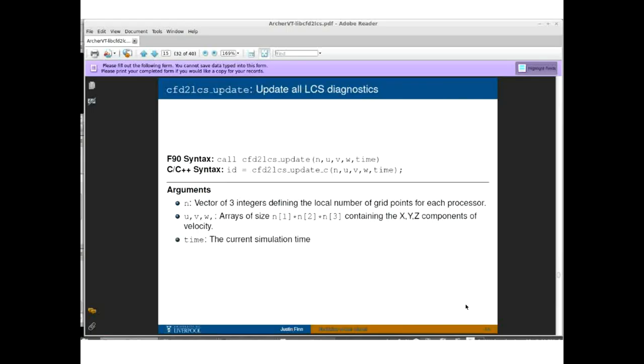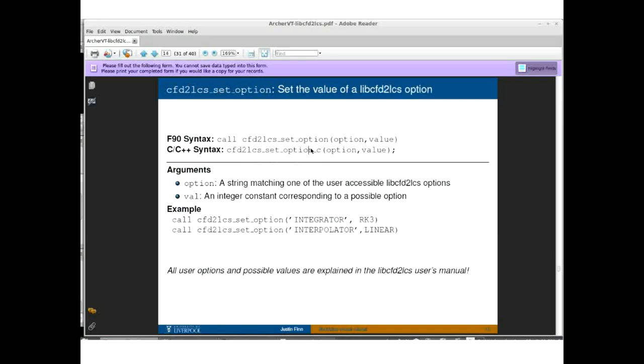The next important call is cfd2lcs_update. Once we've initialized everything, initialized the library, initialized all our diagnostics, then we start our main flow loop of our CFD solver. Every time we update the velocity field, we need to call cfd2lcs_update. What this does is it passes the current velocity field in U, V, and W. This is the same size as your grid, and these contain the X, Y, and Z components of the velocity. Then the library is going to update any LCS diagnostics that you've defined. And then time is just the current simulation time.